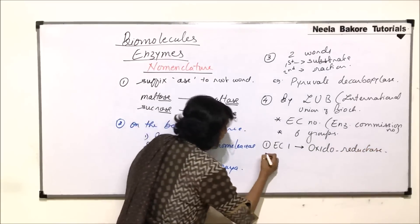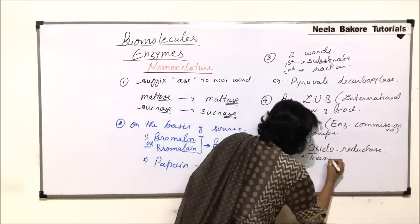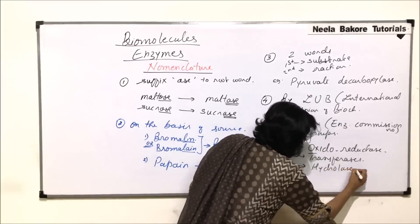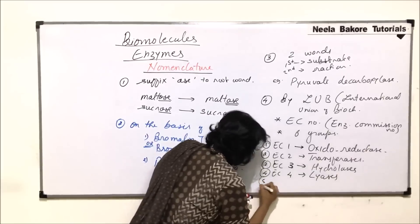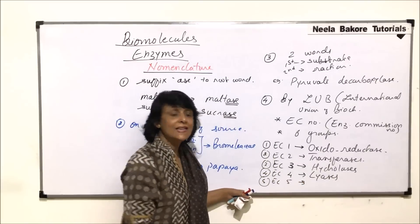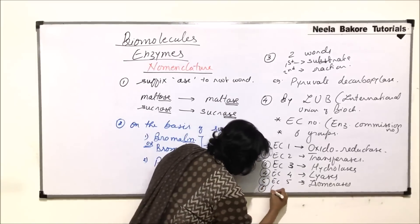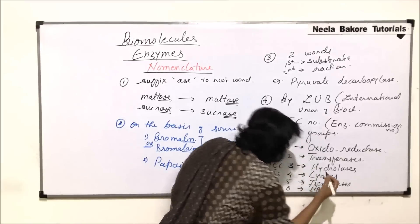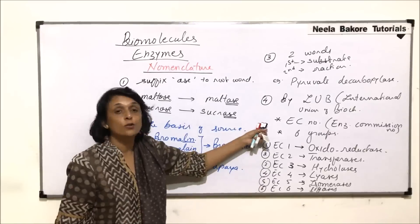The second group, EC2, contains enzymes known as transferases. The third group, EC3, are called hydrolases. The fourth group, EC4, are called lyases. EC5 enzymes are known as isomerases. And EC6 enzymes are known as ligases. These are the six groups into which enzymes have been classified according to the most recent system given by the International Union of Biochemistry.